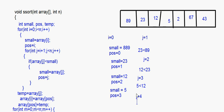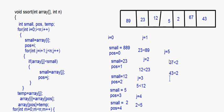After that j becomes equal to 4. In the fourth position we have 2. 2 is less than 5, so small becomes equal to 2 and pos becomes equal to 4. Then j becomes 5, which is 67 — 67 is less than 2 is false. Then 43 is less than 2 is also false. So now we come out of the inner for loop. The position of j is already stored in pos, so we don't need j.